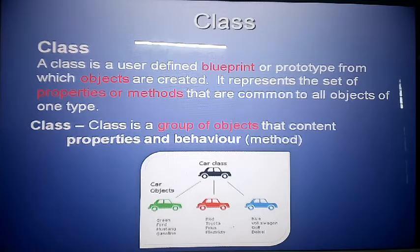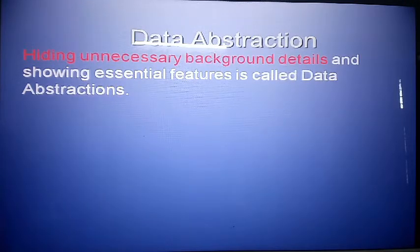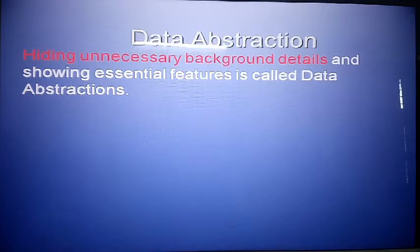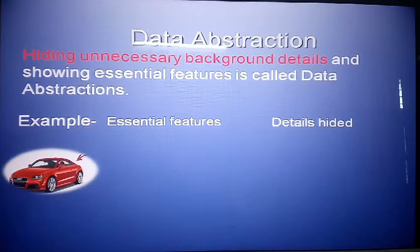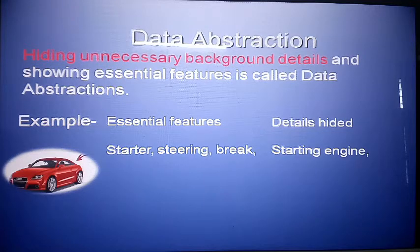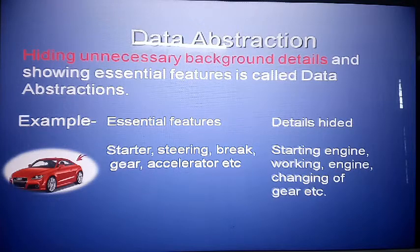Data abstraction is most important. What is data abstraction? Hiding unnecessary background details and showing only the essential features is called data abstraction. Always hide the inside working details of anything, but always show what is in front. For example, in a car: the essential features we can see and use are the starter, steering, brake, gear, and accelerator.